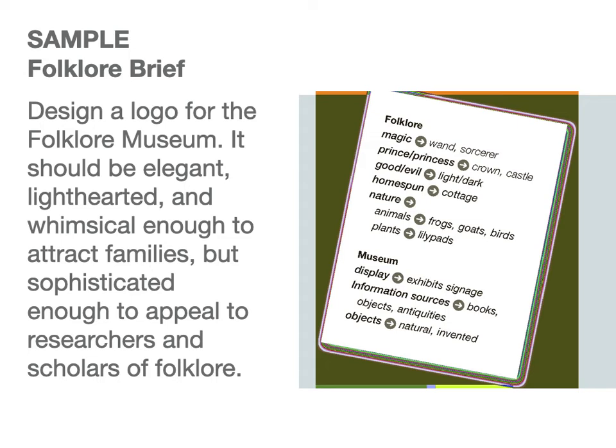I went ahead and did this to show you what yours might look like — you're not doing the folklore museum, you'll do something different. But I wrote down 'folklore' and you can see: witch, Salem, Halloween, cauldron, frog, Lord of the Rings, Game of Thrones, demons, Golden Compass, dwarf, elf, ogre, troll, creatures, Billy Goat Gruff, Bremen Animals, magic animals, unicorn. I just went on and on. You write one thing, and then you get to wizards, and from that Harry Potter comes off of that, and J.K. Rowling, and Ron, Hermione, et cetera.